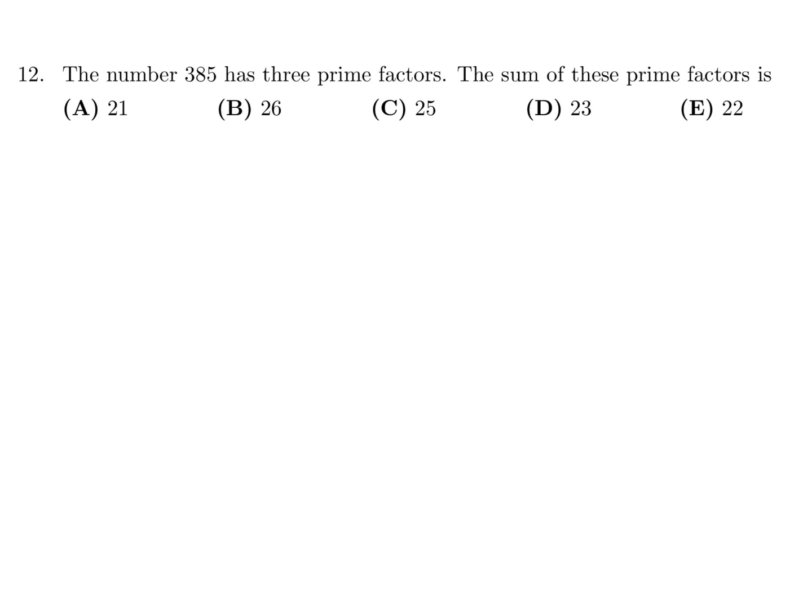The number 385 has three prime factors. The sum of these prime factors is. So 385, if you break it up into prime factors, would be, I believe, 5, then 77. So that would be 7 times 11. So these are the three prime factors, and they're just asking you the sum of those numbers. So it would be 5 plus 7 plus 11, and that is 23. So 23 is D.